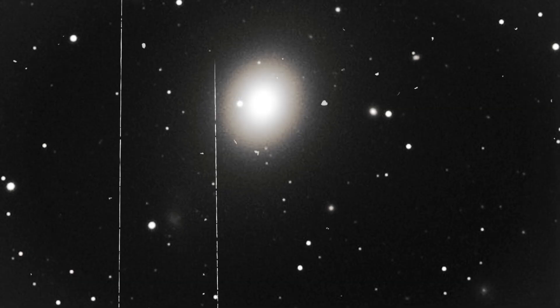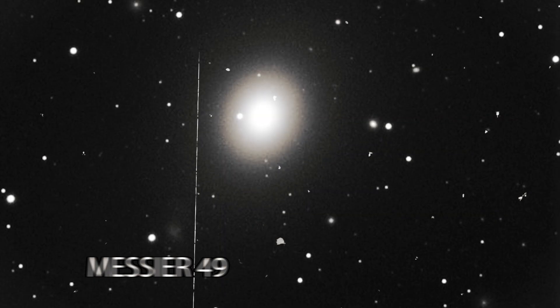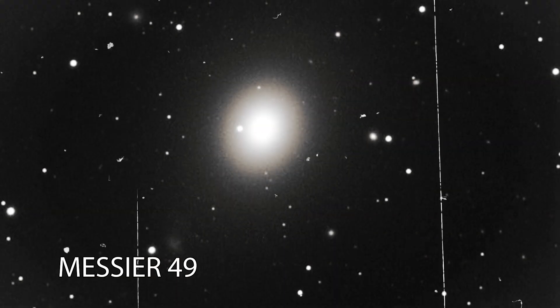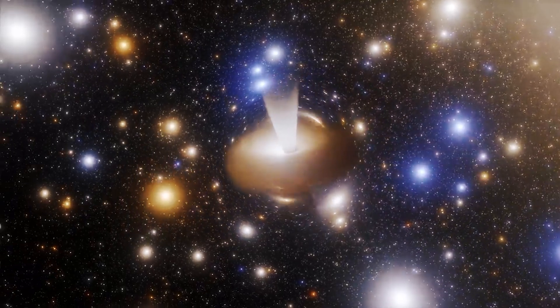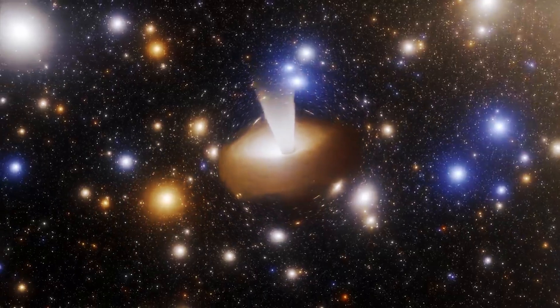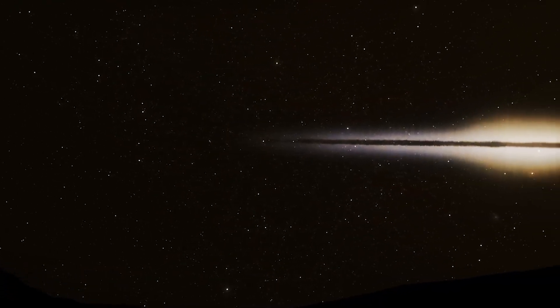That giant glowing orb near the center is Messier 49, a ghostly elliptical galaxy, an ancient city of stars that has long since stopped giving birth to new ones, its smooth, featureless glow, a sign of old age.